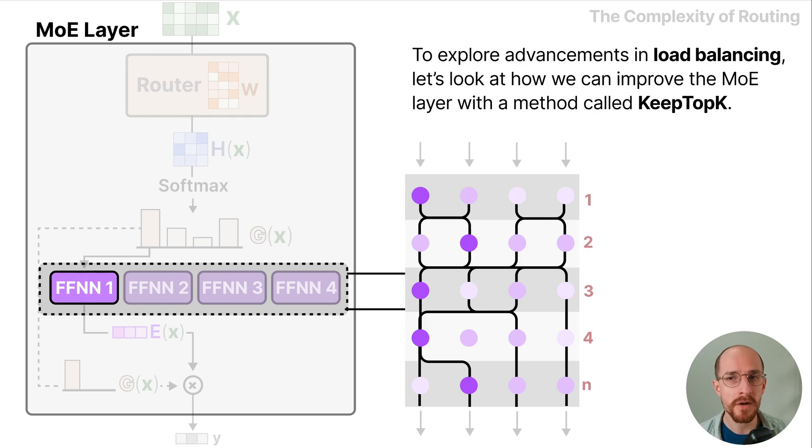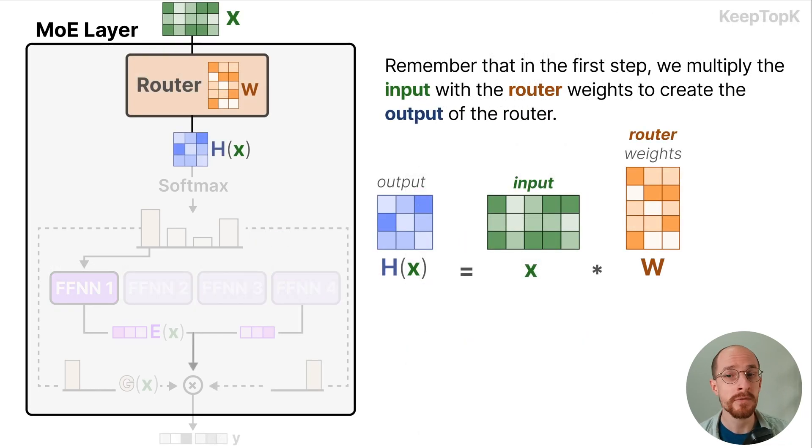To explore advancements in load balancing let's look at how we can improve the MoE layer with a method called keep top k. Remember that in the first step we multiply the input with the router weights to create the output h of the router.